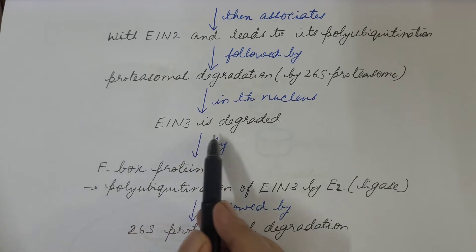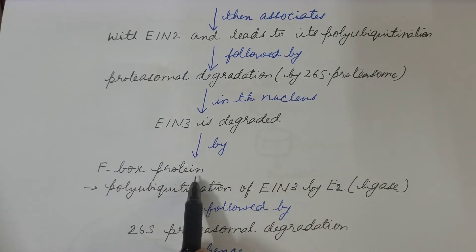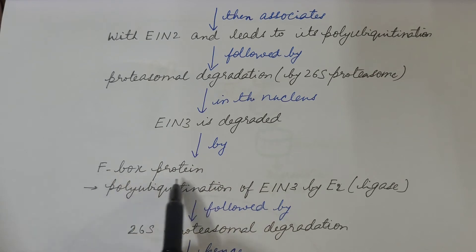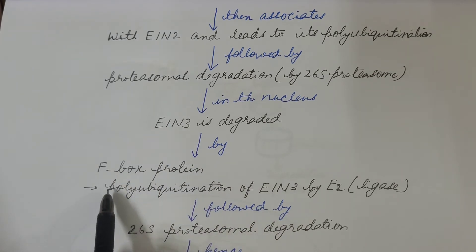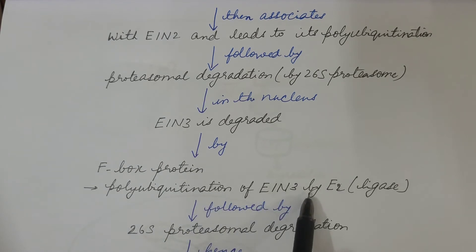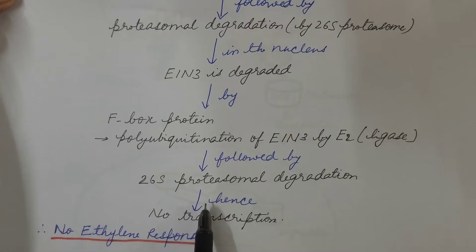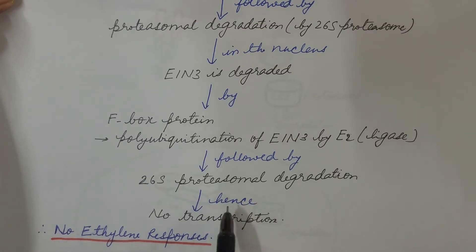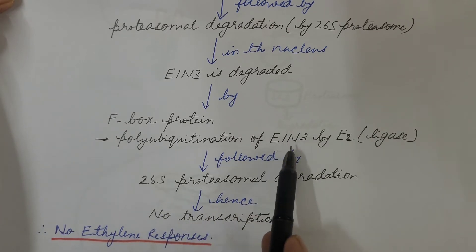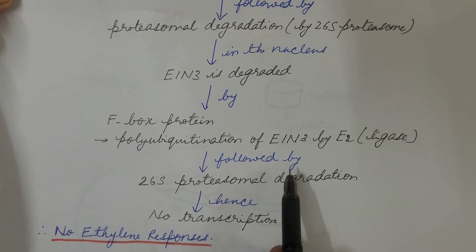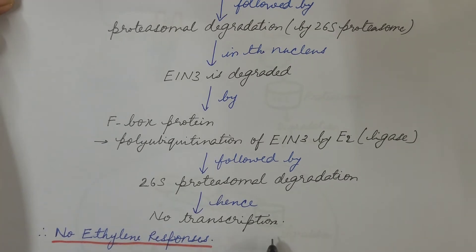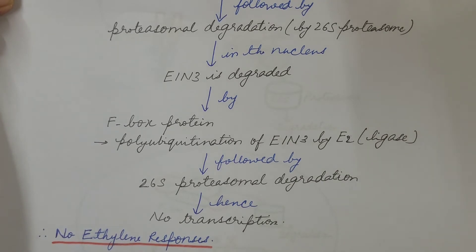Also in the nucleus, EIN3 is degraded by an F-box protein. EIN3 binds with the F-box protein, which is followed by polyubiquitination of EIN3 by E2, which is a ligase. This polyubiquitination is followed by 26S proteasomal degradation of EIN3. Hence EIN3, which is the transcription factor, does not bind with the regulatory region of ethylene response genes. Therefore no transcription takes place, and no ethylene responses or physiological effects of ethylene are seen in plants.